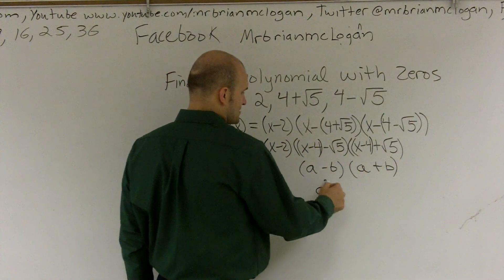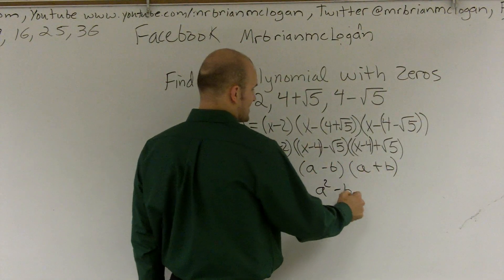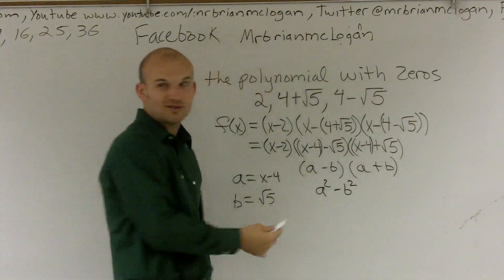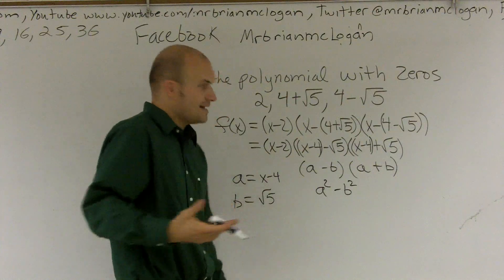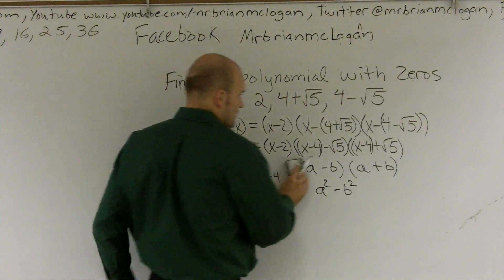And the reason why it's so awesome is because that eliminates our middle terms. I now have, if I was to multiply these, I'd get a squared minus b squared. I don't have any of that middle stuff anymore. So this is awesome. By distributing the property and grouping them, I now can do a difference of two squares.